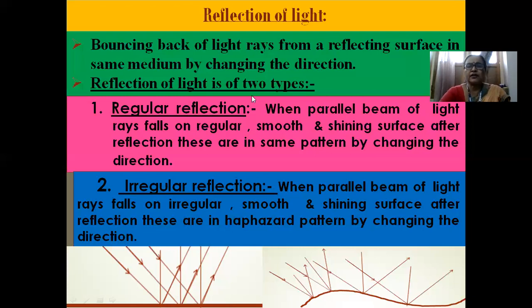Reflection of light, we have two types of reflection. Regular reflection when parallel beam of light rays falls on the regular smooth and shining surface. After reflection these are in same pattern by changing the direction.